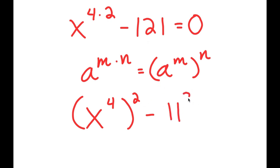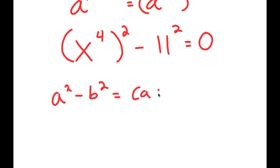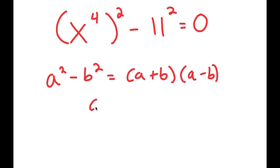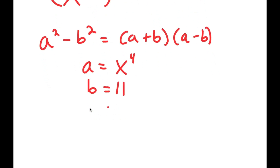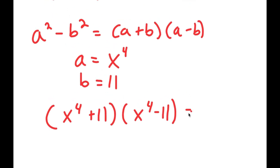We can now use an important algebraic property: if I have something in the form a squared minus b squared, this equals a plus b times a minus b. In this case, a is x to the power of 4 and b is 11. So I get x to the power of 4 plus 11 times x to the power of 4 minus 11, which equals 0.